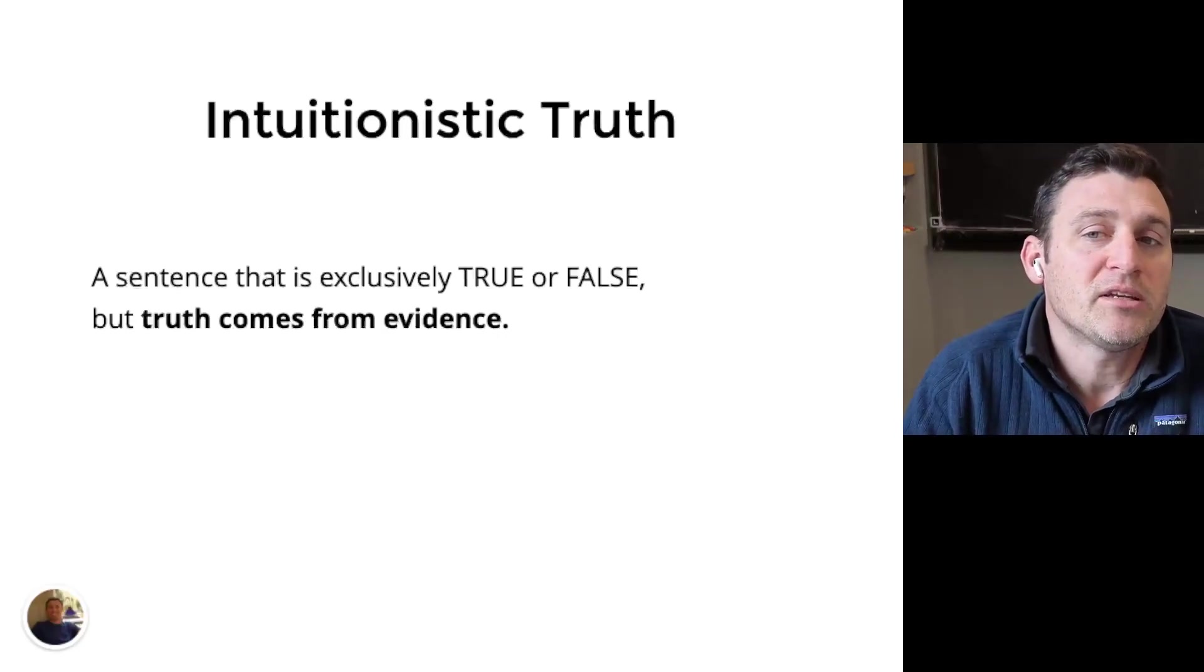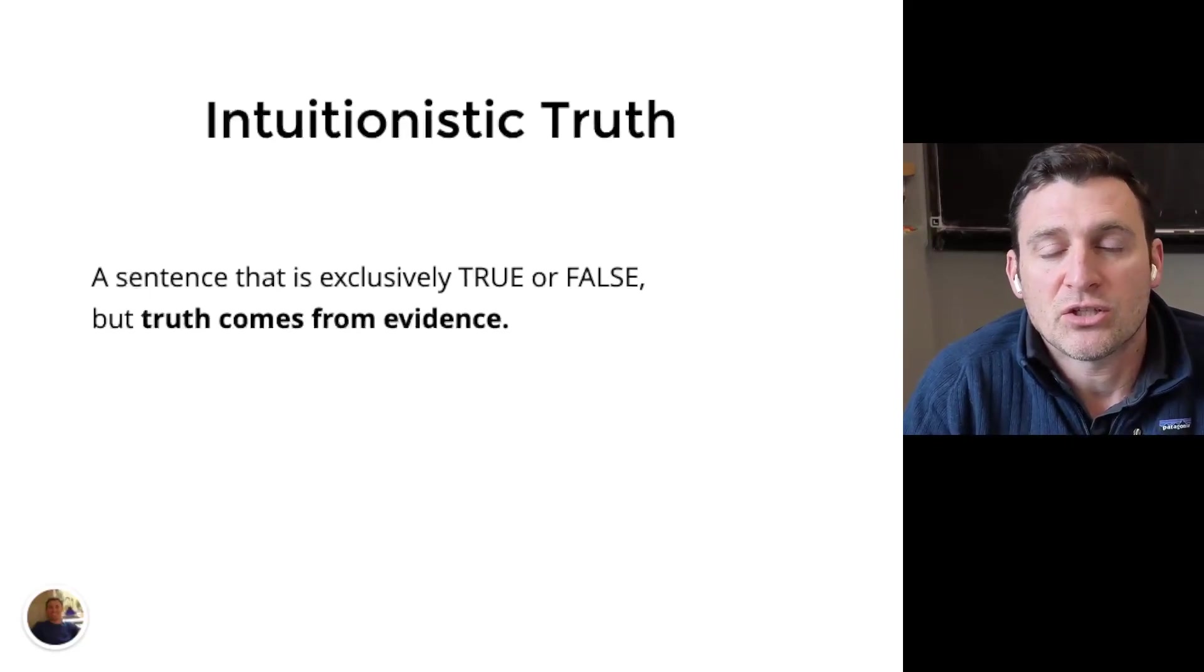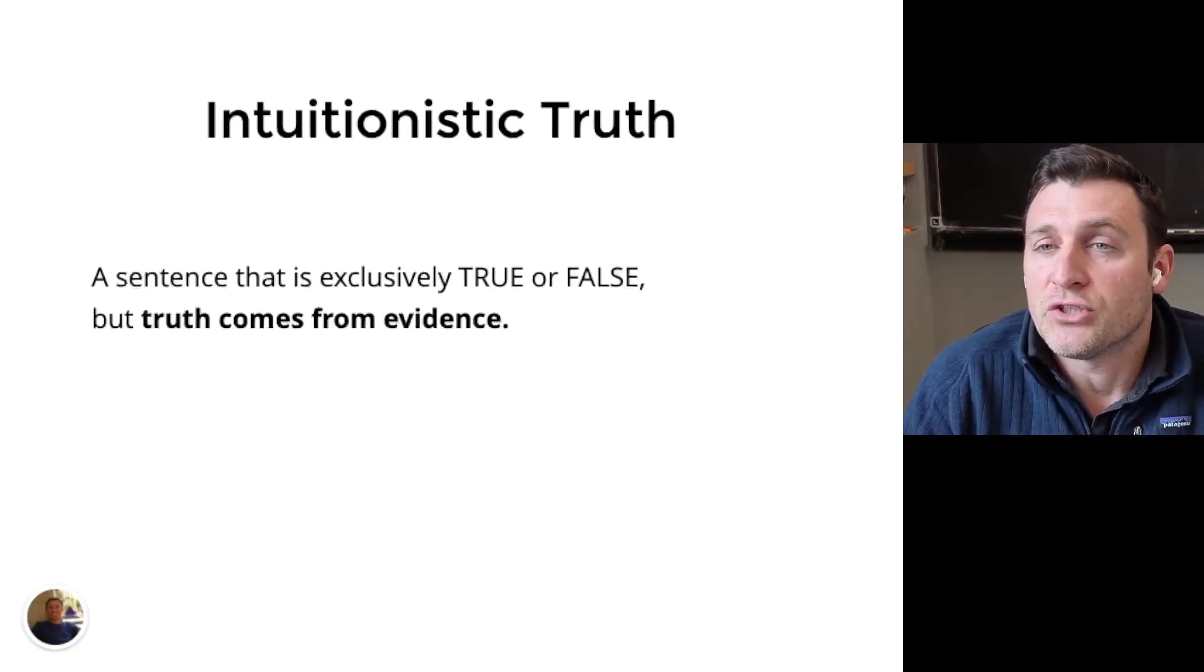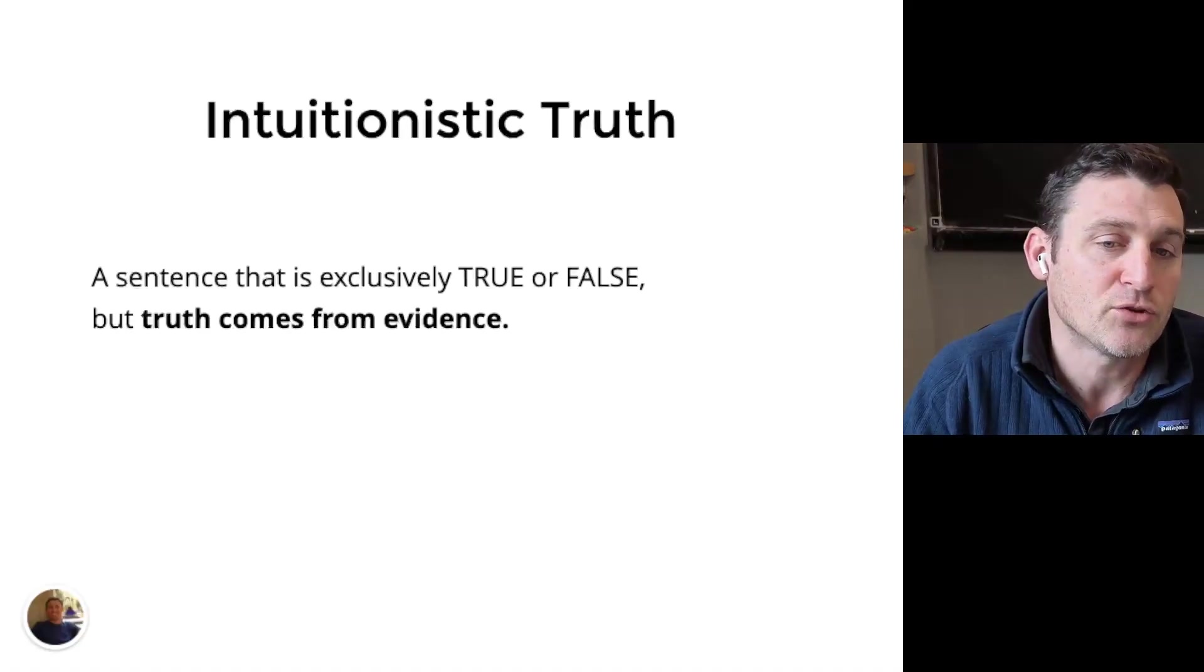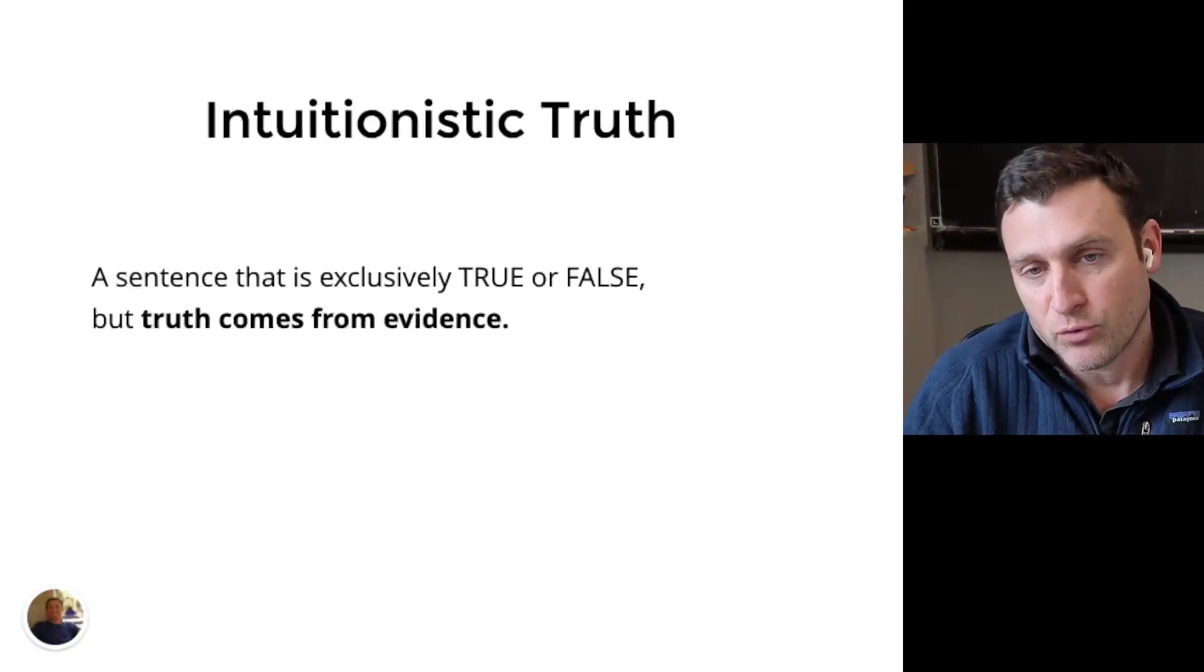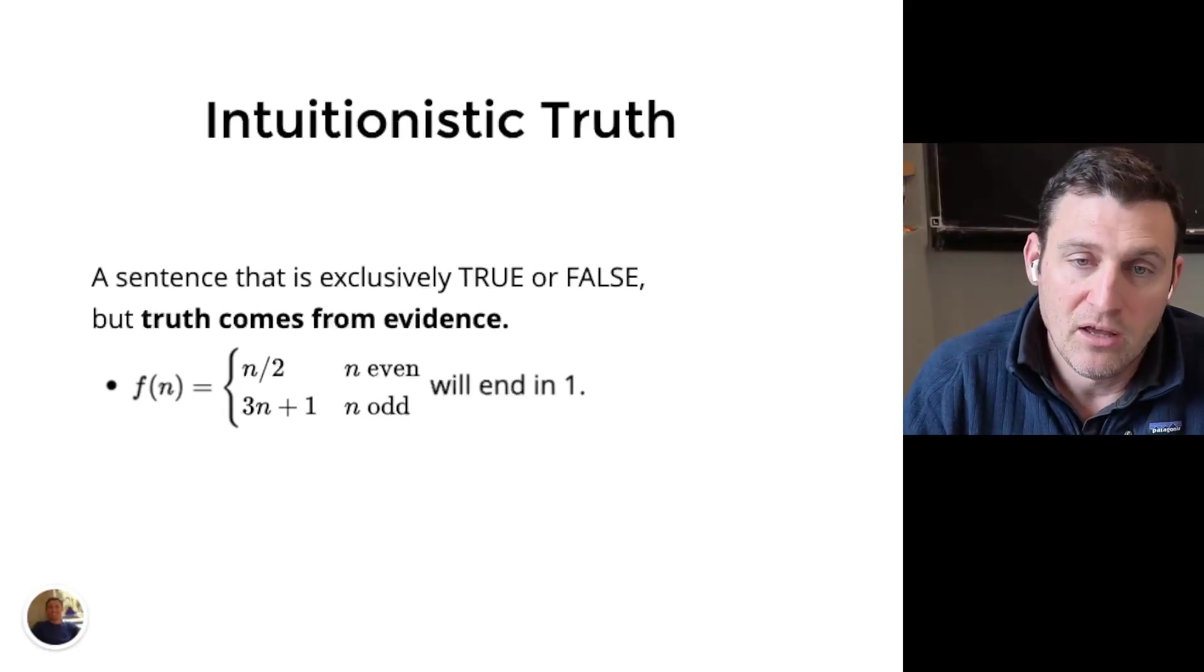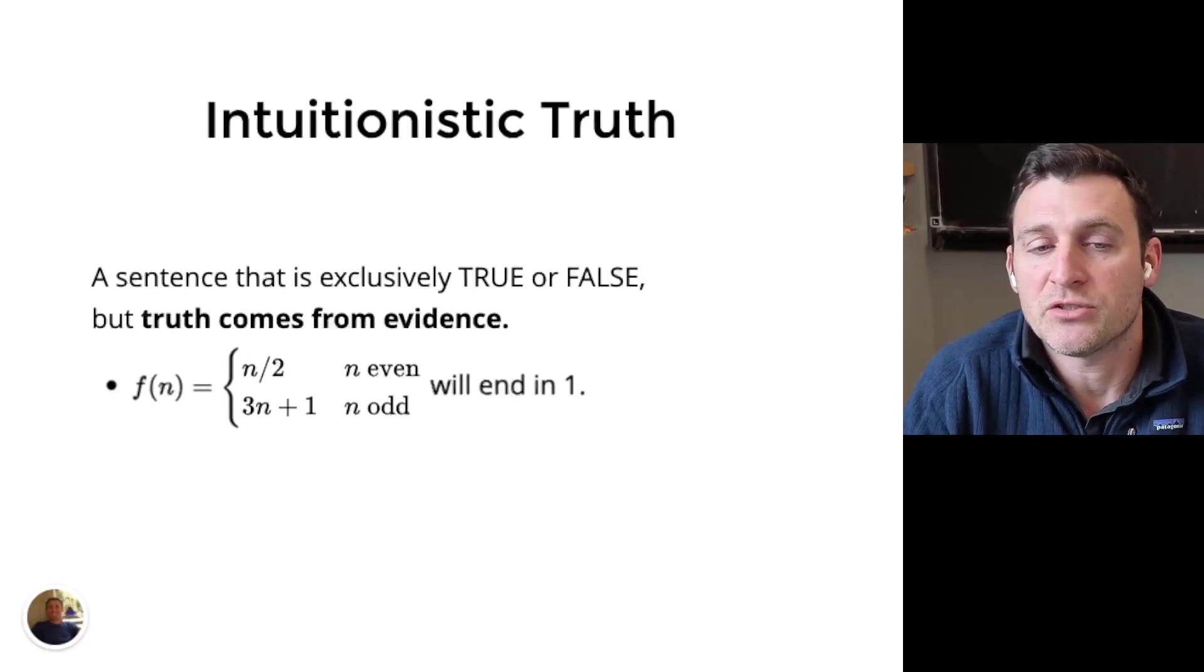Now let's turn to something called intuitionistic truth or intuitionistic logic. Here we still maintain the same concepts of classical logic in that we talk about exclusive truth and false. However, unlike a judgment where we don't explain why something is true, in intuitionistic logic we require that truth only come from evidence. You must provide a proof of it or evidence.